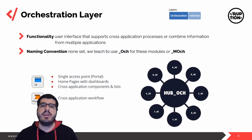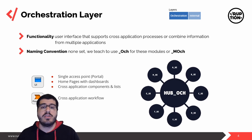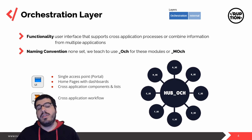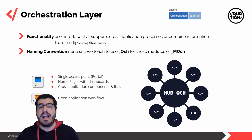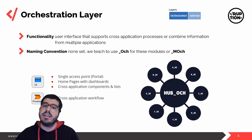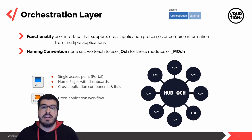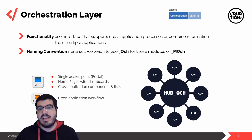The orchestration layer is a user interface that combines cross-application processes or multiple information from several applications. Think of it as a train terminal — you have point A, which is your terminal, and it has access to several locations B, C, D, E, etc. You just need to take one connection — in this case the train — to get from point A to point B. This is exactly the same thing with your portal or hub.